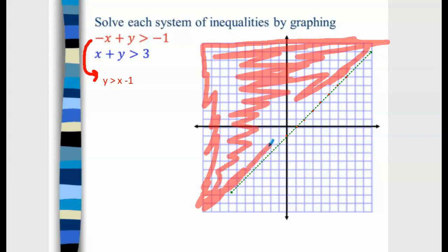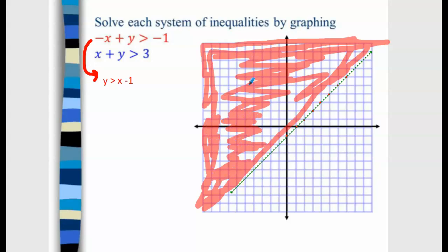When shading your first line of the inequality, especially if using pencil, shade very lightly. You want to see where your shading is, but not so dark that you can't see the overlap with the next line. So the first line shades above, kept light when drawing.